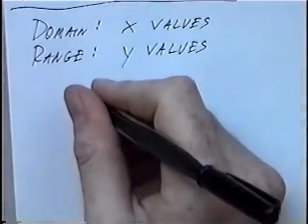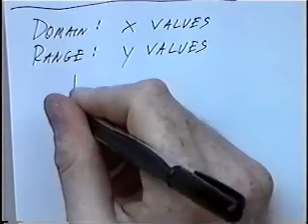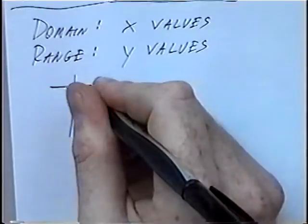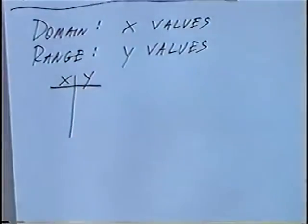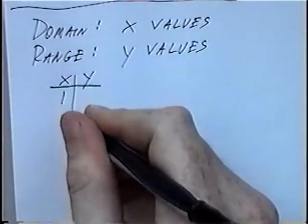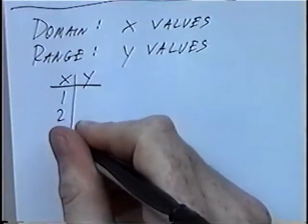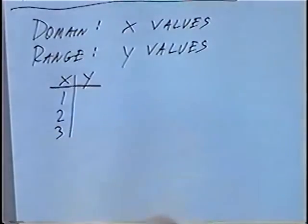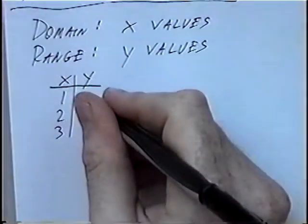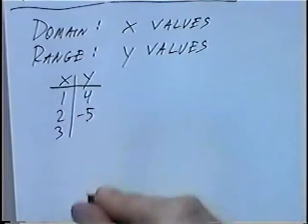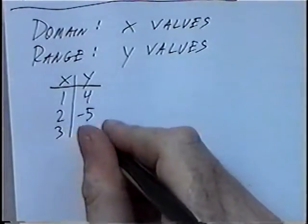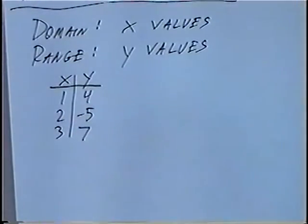The first problem is a t-table or XY chart. The X-values are 1, 2, and 3. And the Y-values are 4, negative 5, and 7.